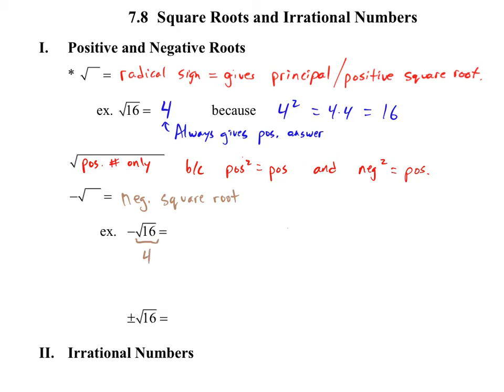This right here is going to give me a 4. And we have that negative in front of it. So the answer is just going to be this negative 4. So that's the way that they will get the negative square root. This here will always give a positive answer. And this thing here makes it negative.